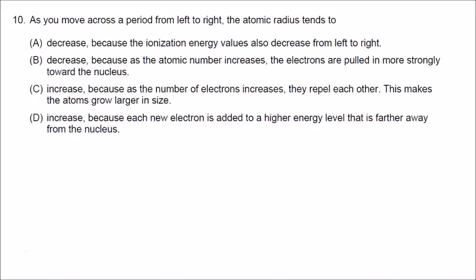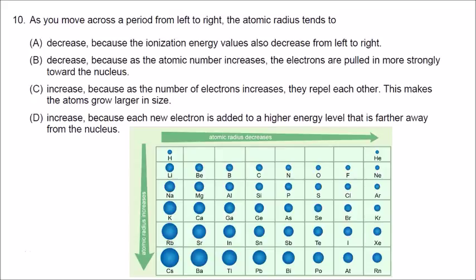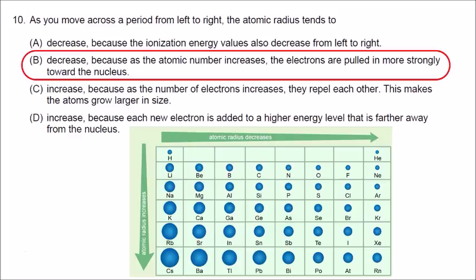Number ten: atomic radius decreases from left to right, so the correct answer is either A or B. There is an inverse relationship between atomic radius and ionization energy, so ionization energy values increase from left to right across a period. Choice A is incorrect because it says ionization energy decreases from left to right. Choice B is correct: electrons are pulled in more strongly toward the nucleus as the atomic number — the number of protons — increases.